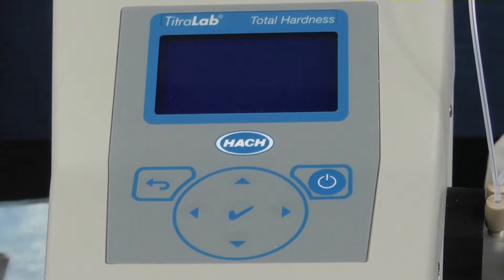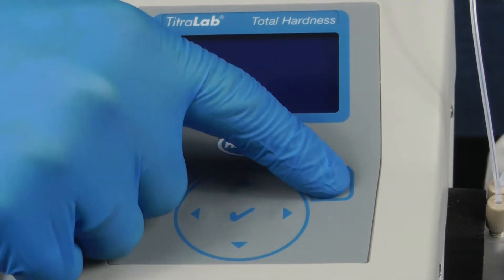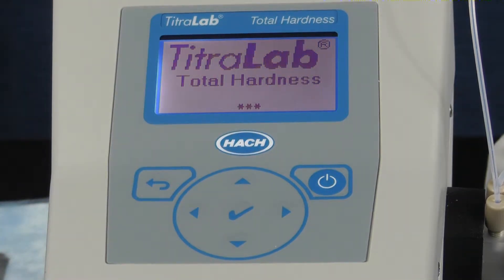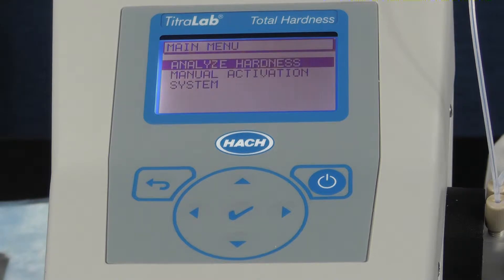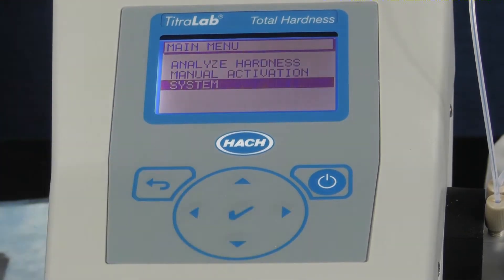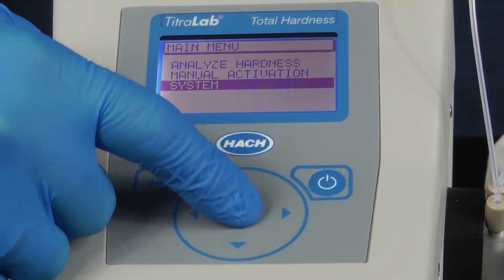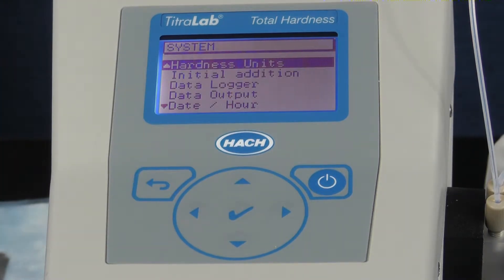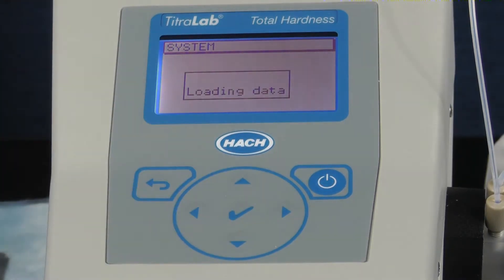To make sure you are in the correct units for your results and to check the results factor for the buffer you are using, turn on the instrument, select system, select hardness units, select milligrams per liter CaCO3 from the list.